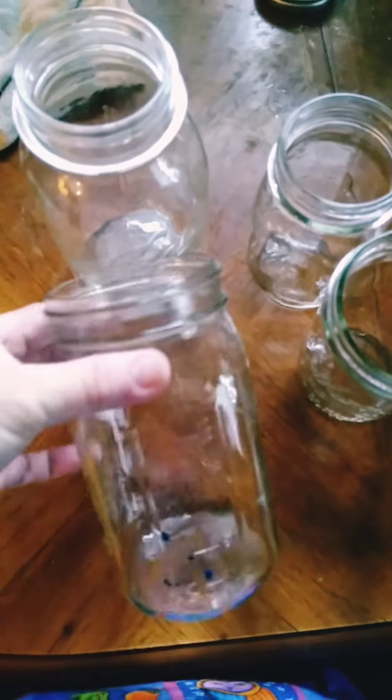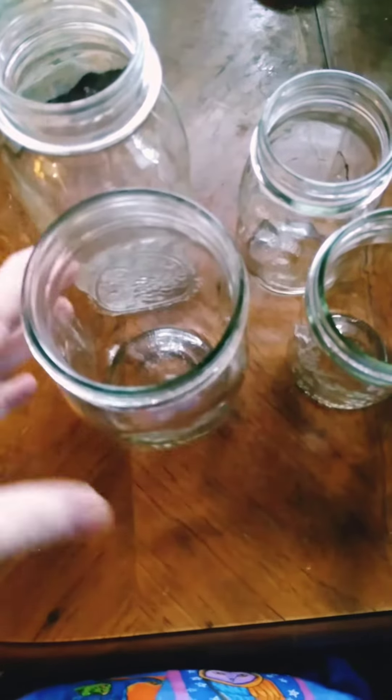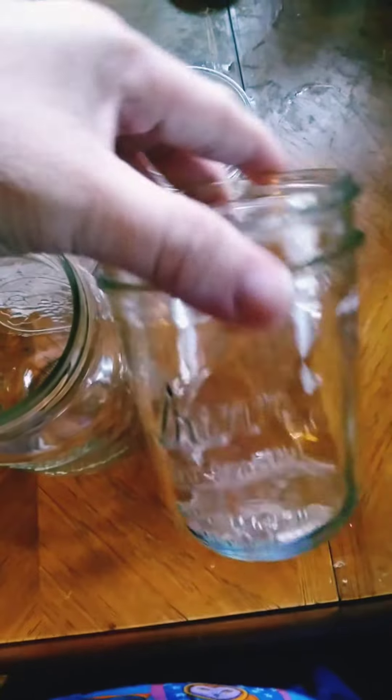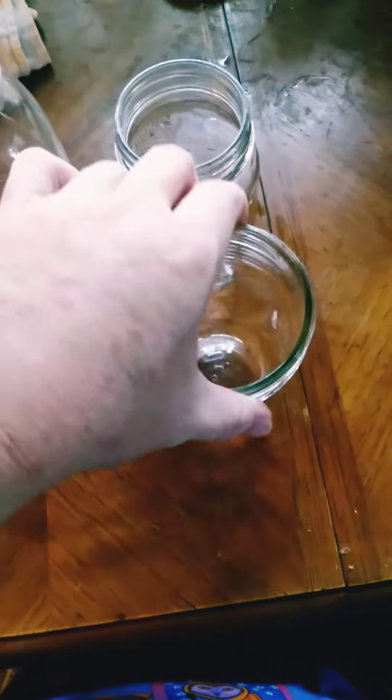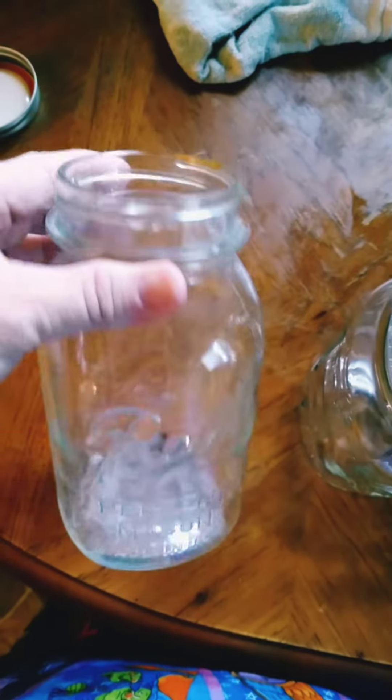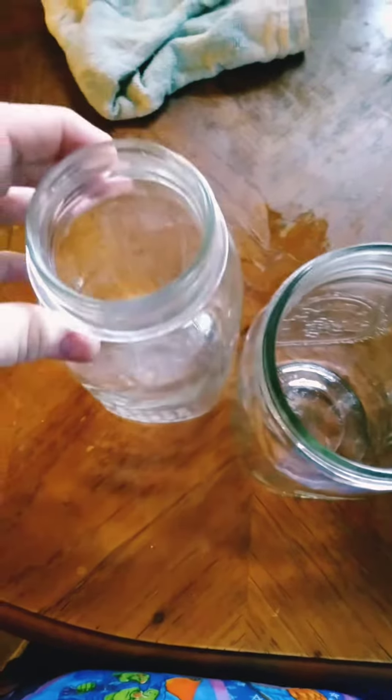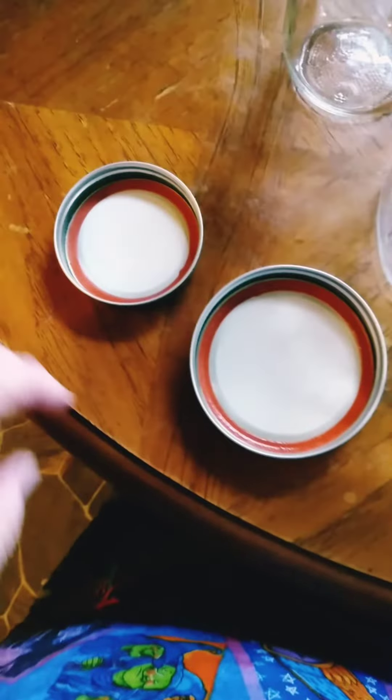So this is a wide mouth quart size jar. There's the quart, and this is a wide mouth pint size. This is a regular mouth. This is what most of the jars look like. That's the size that they come in. That was the quart. This is the pint, and you can actually tell the difference in the lids.